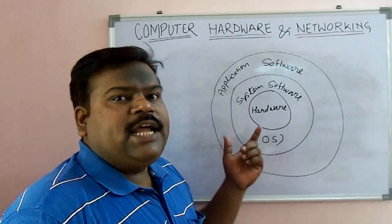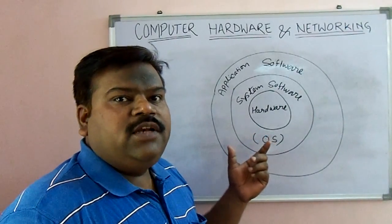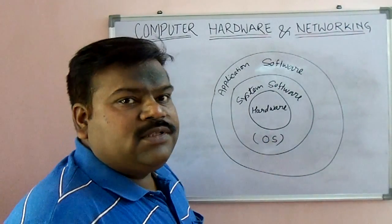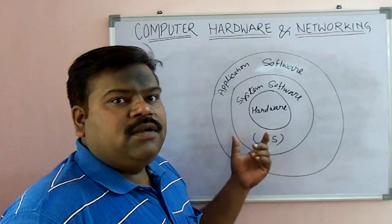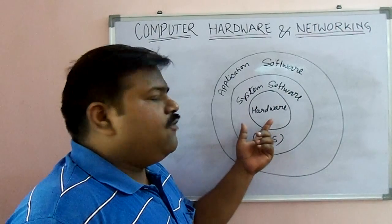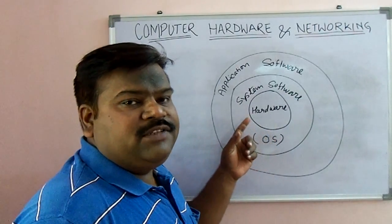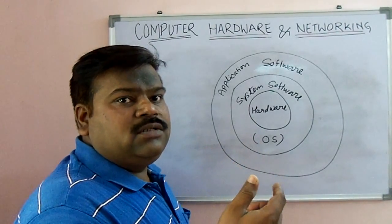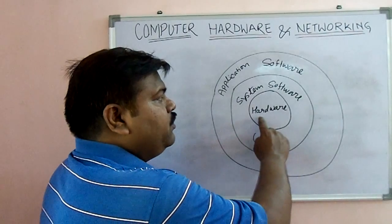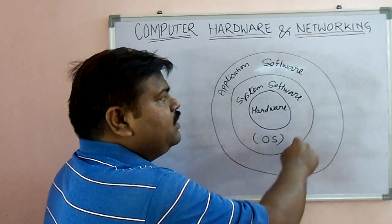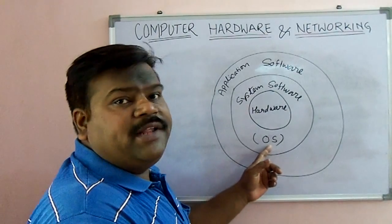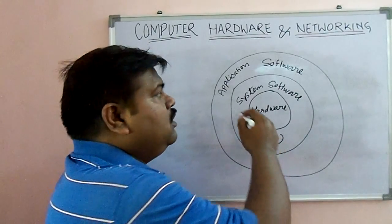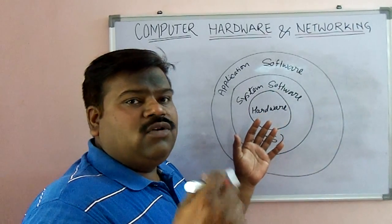Let us see this diagram to understand the difference between system software and application software. First we buy hardware, be it a desktop or laptop. After buying the hardware, we first install an operating system like Windows 8 or Linux. So the first layer is hardware, the second layer is system software, that is the operating system, and after installing the OS we install application software like MS Office and Photoshop.